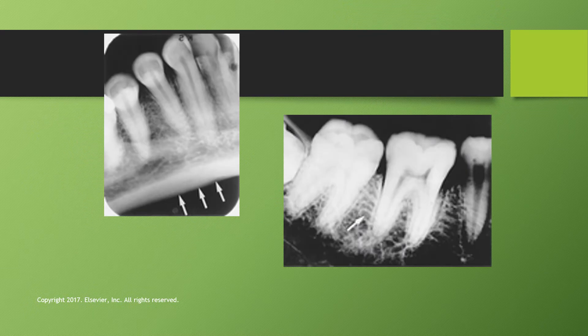Here you can see what that looks like. On the left, you can see the cortical plate of bone underneath. On the right, you can see this lacy or lattice-looking appearance of the bone in between the teeth — that is cancellous bone.